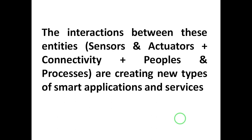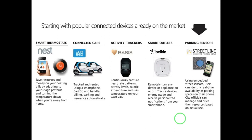In a nutshell, the interaction between these entities — sensors, actuators, connectivity, people and process — is creating new types of smart applications and services. For example, looking at popular connected devices already on the market: a smart thermostat saves money on heating bills by adapting to your usage patterns and turning the temperature down when you are away from home. Another use case is connected cars — 'Car2Go' — which tracks and enables rental using a smartphone application.